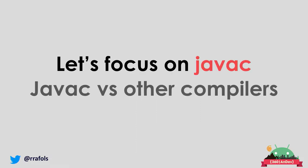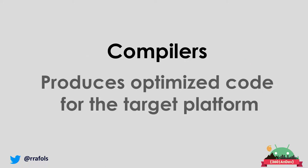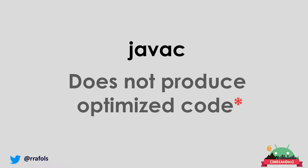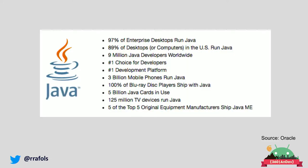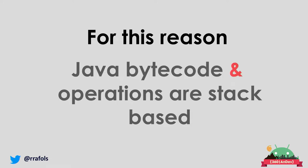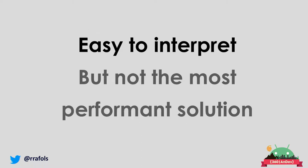The idea behind Jack was to compile directly from Java to the dex file, not going through javac. So what was the problem with javac? Comparing it with other compilers: when you compile in C, the compiler produces code optimized for the target architecture. In Java it doesn't produce optimized code because it doesn't know where it will be executed — Java is 'build once, run everywhere.' There are plenty of architectures: ARM, MIPS, Intel, and many others.